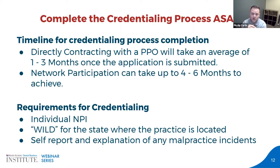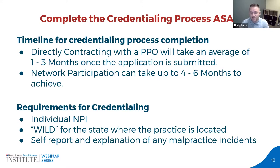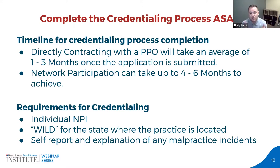Network participation with umbrella network companies like Careington, Connection, Zelis, or third-party administrators can sometimes take a little bit longer because they have to communicate with multiple parties — anywhere from four to six months. Because we're constantly tracking submission dates versus effective dates across hundreds of doctors monthly, our ETAs tend to be more accurate and a little more aggressive since we minimize the errors the average practice would make.